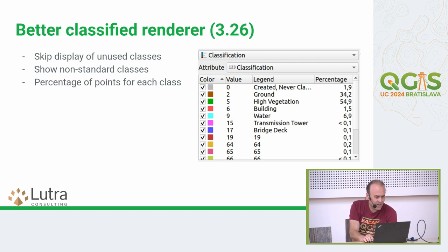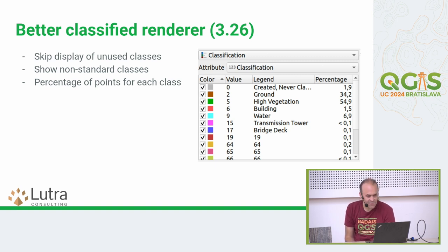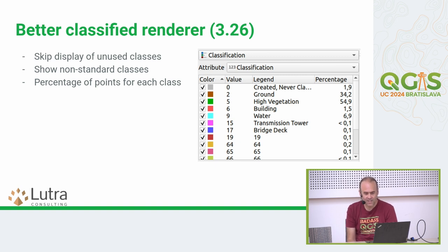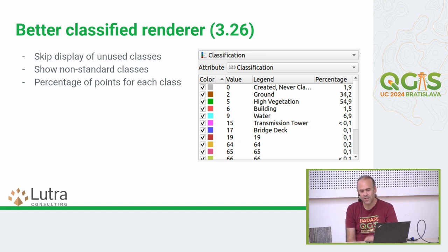Another change in 3.26 was to prettify the classified renderer. It used to populate all individual theoretical classes in the dataset even if they didn't contain any points, but now you get just the classes that you actually have in your dataset. You also get a percentage value of how many points are in each class, so you can get a better picture of your data.